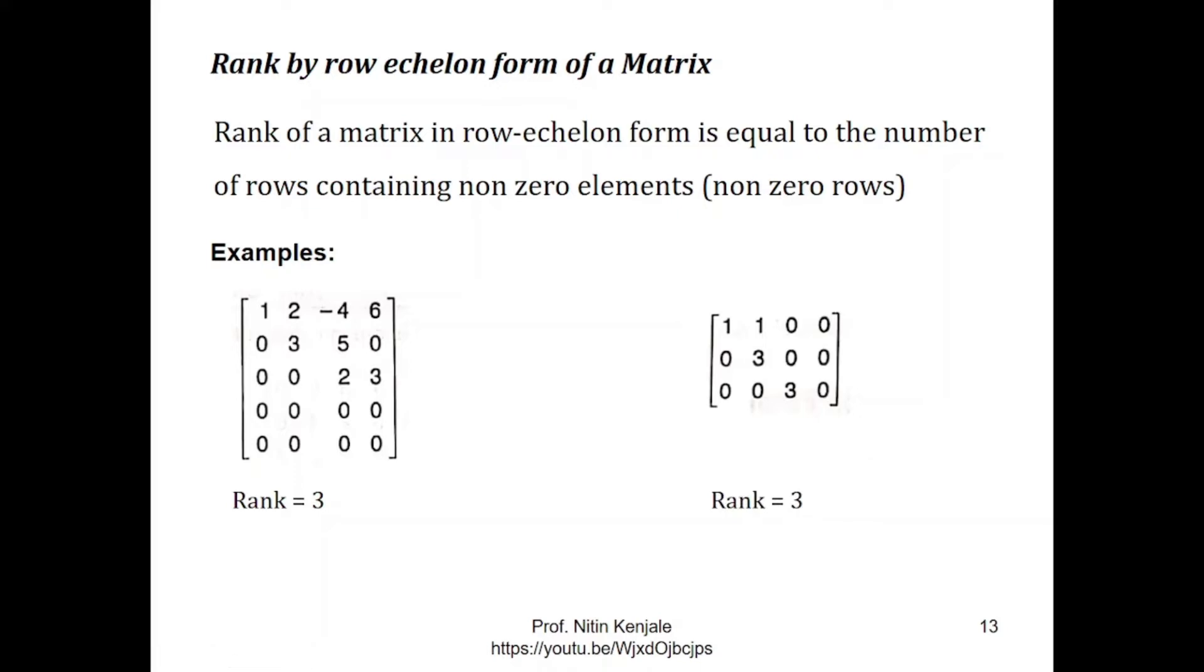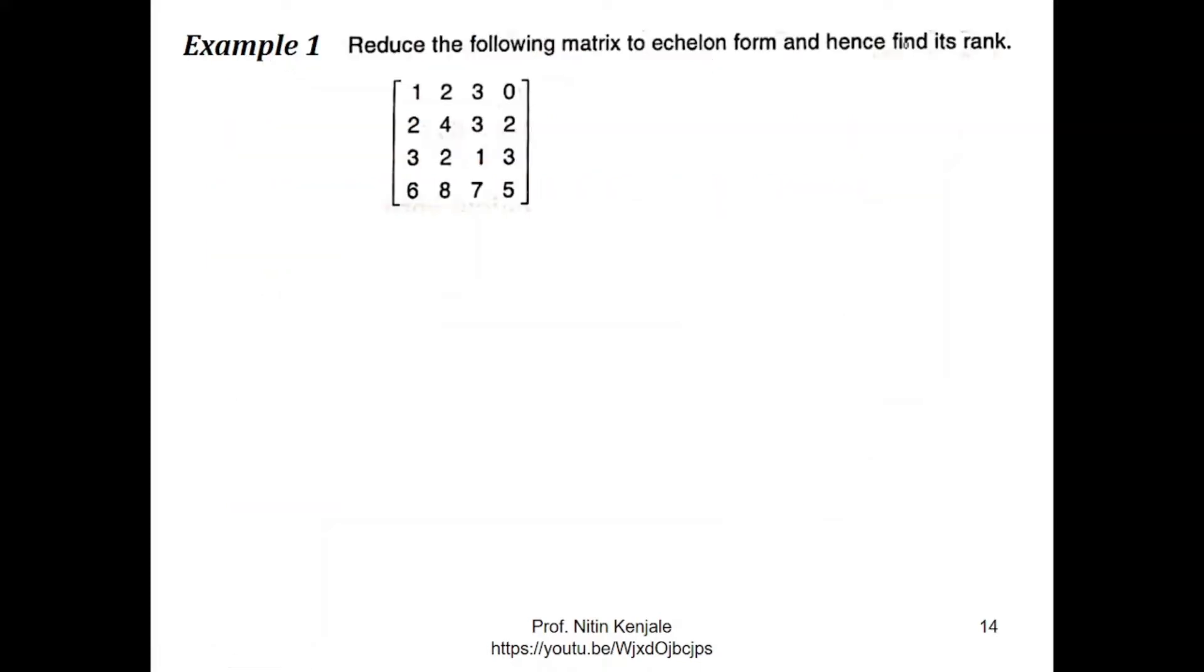Now let us see an example of this. Here the question is to reduce the following matrix to row echelon form and find its rank. So let us first reduce this matrix to row echelon form. I see element at a11 is not equal to 0. Then we will try to bring 0 at position a21, a31 and a41 with the help of element at a11.